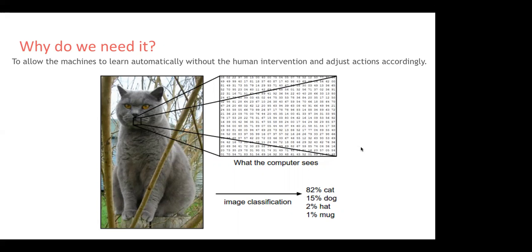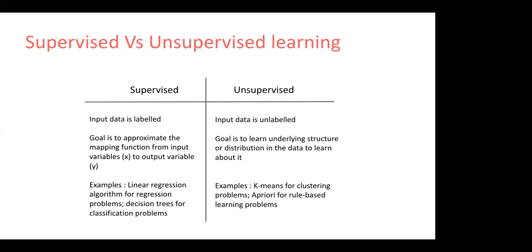Let's start with one of the basic building blocks of machine learning and NLP algorithms. We have supervised and unsupervised learning. In supervised learning, we have labeled input data. In unsupervised, the data is not labeled. The goal in supervised learning is to determine the mapping function from input to output variables, while in unsupervised, the goal is to learn the underlying structure and distribution of the data. A lot of EDA processes take place.